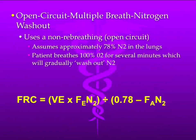Now let's look at nitrogen washout — specifically the open circuit multiple breath nitrogen washout. Using several breaths is the most accurate approach. It uses a non-rebreathing circuit, so you don't rebreathe your CO2. We're assuming about 78–79% nitrogen in the lungs, and we have the patient breathe 100% oxygen for several minutes to wash out the nitrogen. There's a formula based on exhaled nitrogen, how long it takes, how many breaths, and what the volume is.